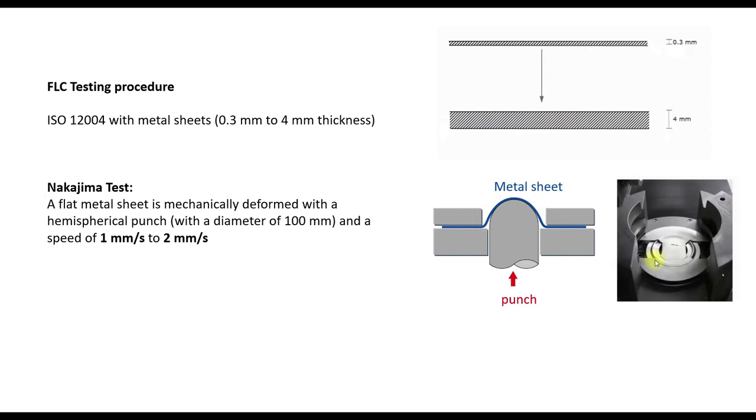So this is basically a side view and this is from top. So we have here the metal sheet in the machine and from the bottom there comes a mechanical hemispherical punch with a certain speed. And then the metal sheet fractures and the corresponding strains are plotted in the FLC. And now a short video of the testing procedure.